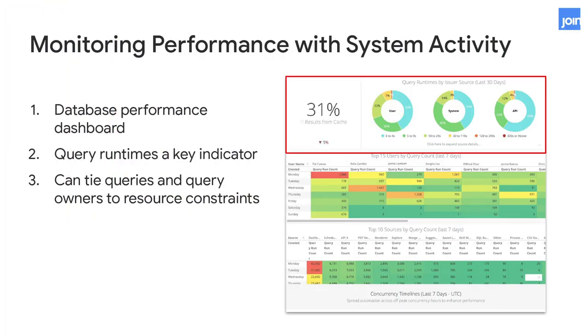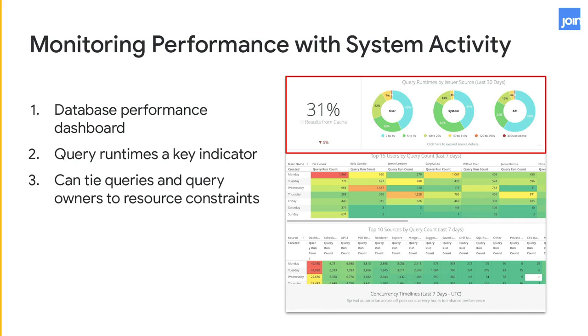Another common use case for system activity analytics is monitoring instance and query performance inside Looker. If you go to system activity and the database performance dashboard, you'll be able to very quickly see some indicators of query runtimes and overall query performance. This is a great leading indicator — if you're seeing performance concerns, it'll show you when those query runtimes start getting longer. You may be able to catch performance concerns before they're even observed by your users, and do some remediation by adjusting when or how queries are run to keep query runtimes fast.